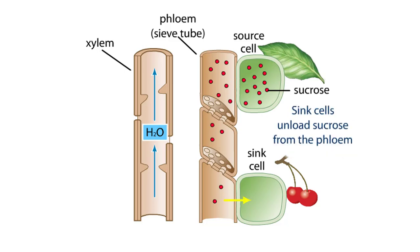Sink cells are any cells that unload sucrose from the phloem. Sink cells are found throughout the plant, but are abundant in roots or developing fruits and shoot tips. Sink cells typically cannot meet their own needs for carbohydrates and must import them from the phloem.